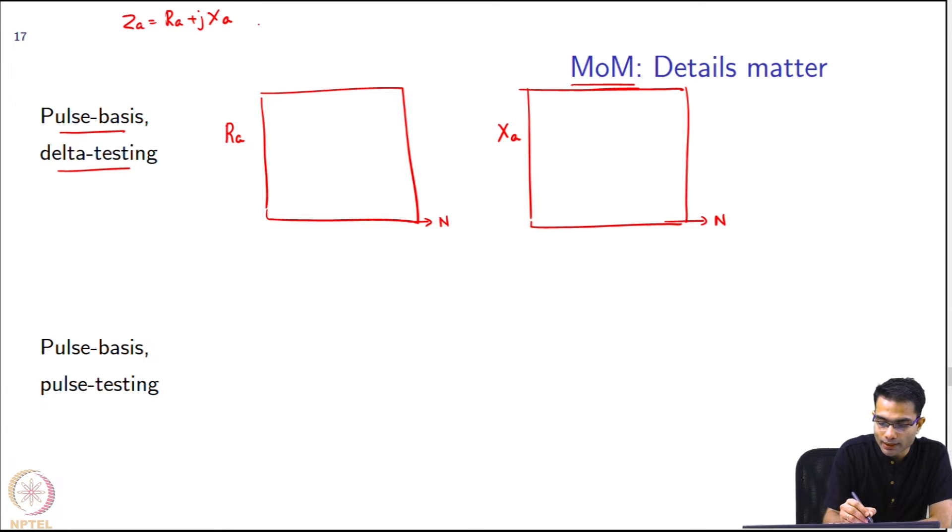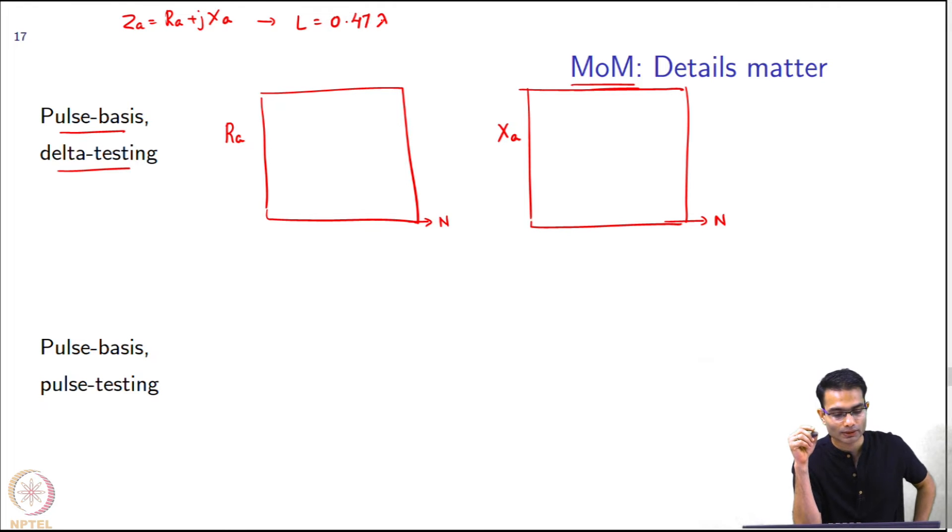The antenna length I am going to choose is a very popular antenna length which is roughly half a wavelength. And it will become clear why I am going to choose this. It is basically a very thin wire almost half a wavelength but slightly less.